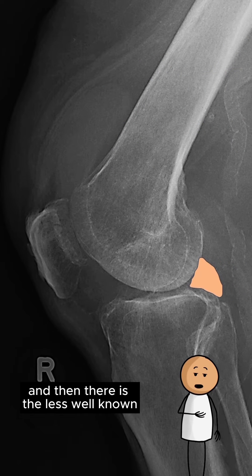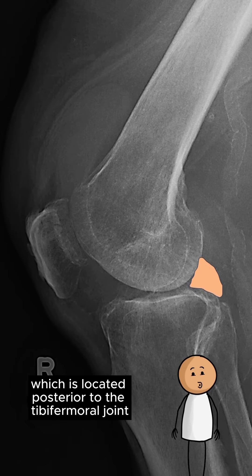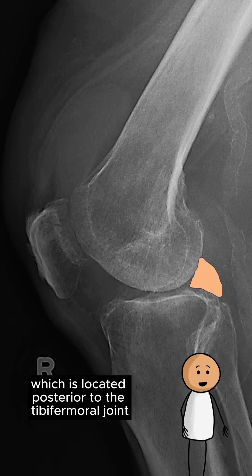There is also the less well-known posterior knee fat pad, which is located posterior to the tibiofemoral joint.